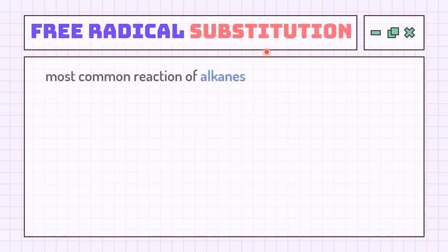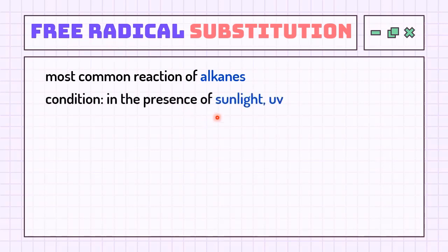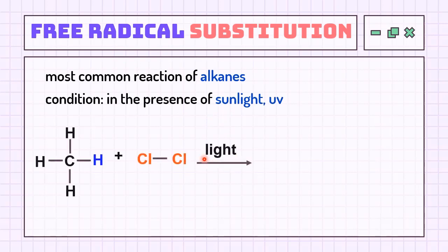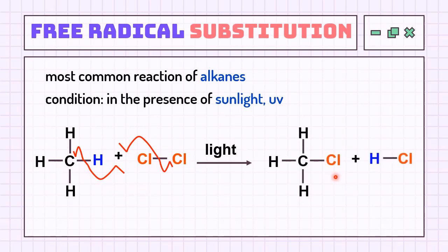Free radical substitution takes place in an alkane because the intermediate free radical species is formed from homolytic cleavage in the presence of light. Given the example of a non-polar bond between carbon-hydrogen and chlorine-chlorine, each atom gets one of the two electrons from the bond. Once the radicals of Cl, H, and C are formed, they immediately undergo substitution reactions to finally form a product with chlorine attached to the carbon and chlorine attached to the hydrogen.